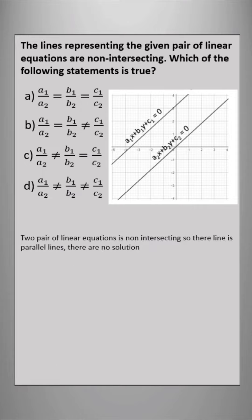Two pairs of linear equations is non-intersecting, so there is parallel lines. So there is no solution. So the correct option is option B: A1 by A2 is equal to B1 by B2 is not equal to C1 by C2.